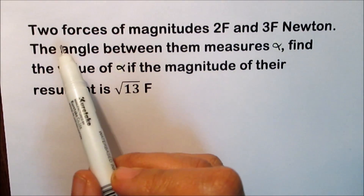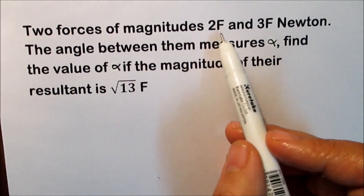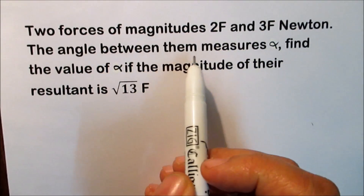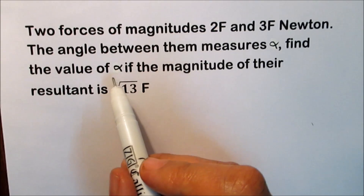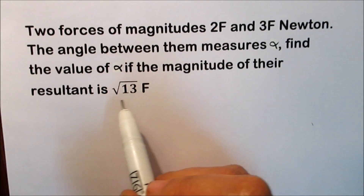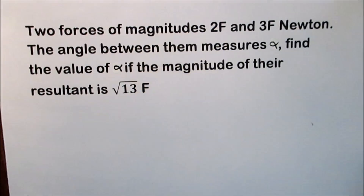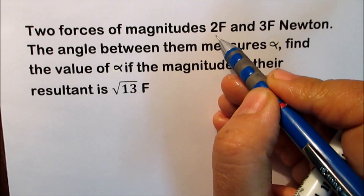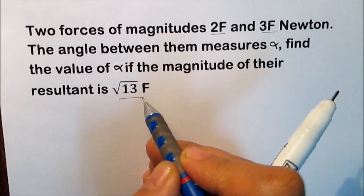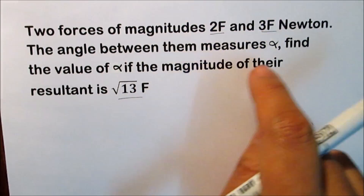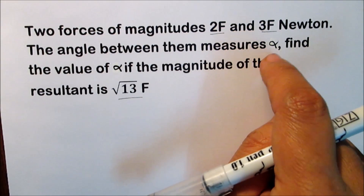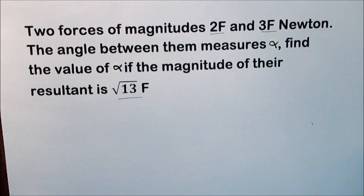First example: two forces of magnitudes 2f and 3f newtons. The angle between them measures alpha. Find the value of alpha if the magnitude of the resultant is √13f. We are given two forces and the resultant, all in terms of f. The angle between the two forces is alpha, and we want to find alpha. This is the general case.